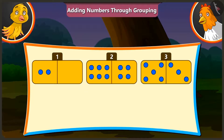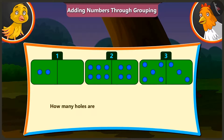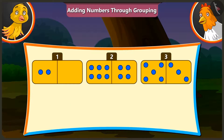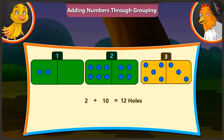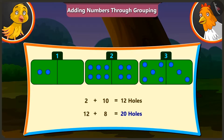You are right. Can you tell me how many holes are there on all three domino cards? To find that, we have to add the number of holes on all three cards. So there are a total of 2 and 10, which is 12 holes. And 12 and 8, which is 20 holes.